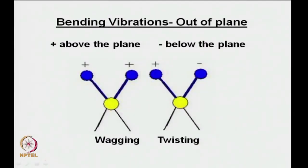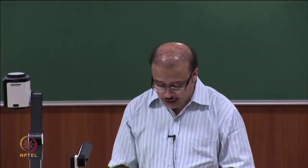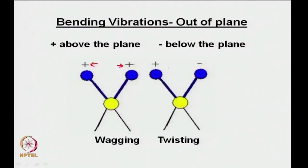For out-of-plane bending vibrations, plus means vibrating above the plane and minus means below the plane. Wagging is when both bonds move in the same direction out of plane — both are above the plane. Twisting is when one bond moves above the plane and the other moves below the plane.